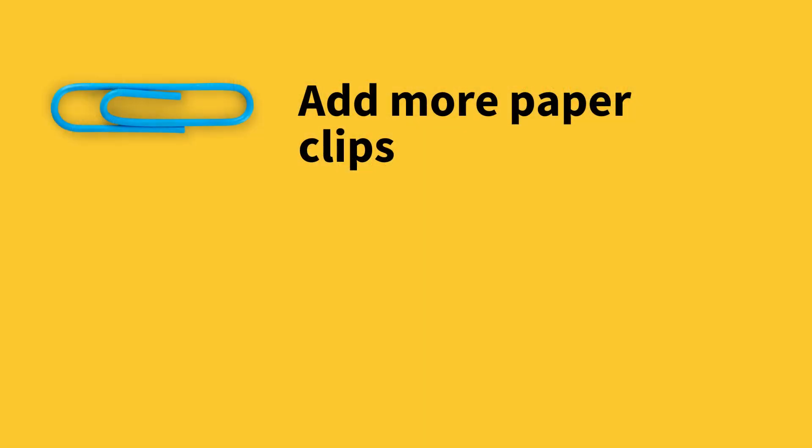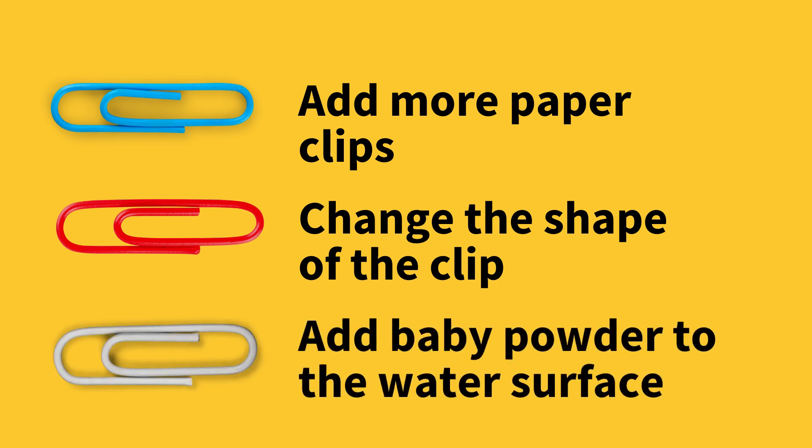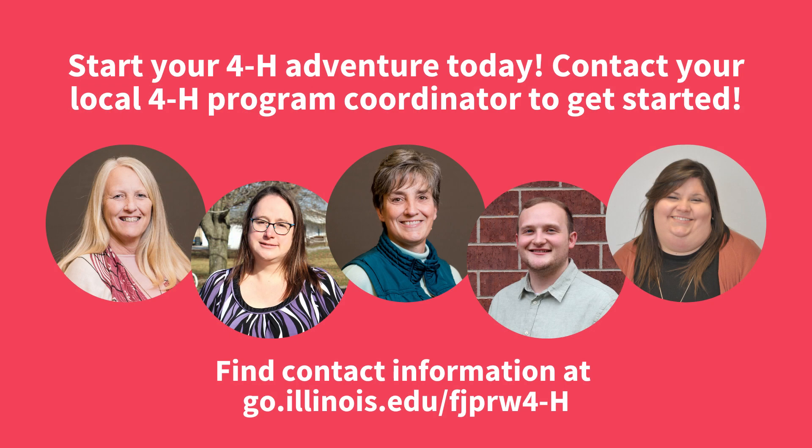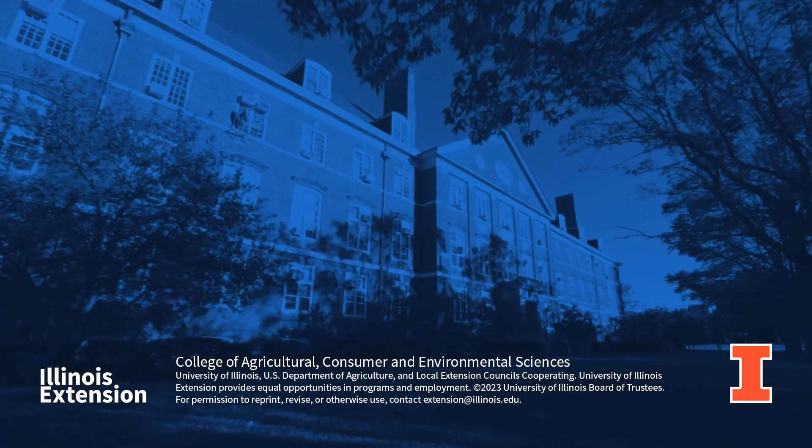Add more paper clips to see how much the surface tension can hold. Change the shape of the paper clip to see if that impacts its floating ability. Sprinkle some baby powder on the water to see if that makes the surface tension stronger.